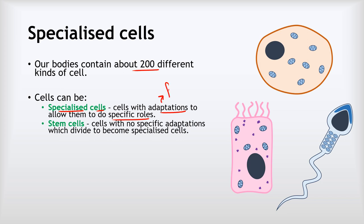We've also got stem cells. These are unspecialised cells that do not have any specific adaptations, but when they divide — that means when they multiply — they can turn into specialised cells. We'll talk a lot more about stem cells in a later video in this playlist.